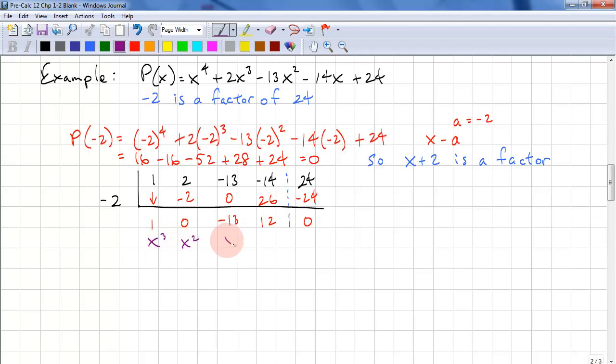Negative 2 times 12 is negative 24, and we get 0 as expected. Our quotient is x cubed plus 0x squared minus 13x plus 12.